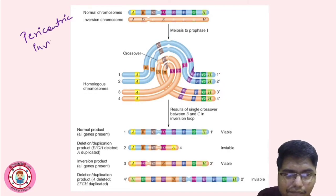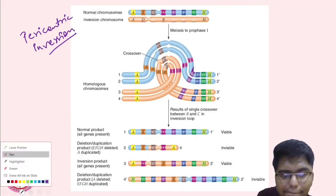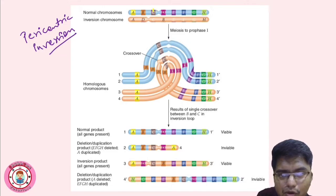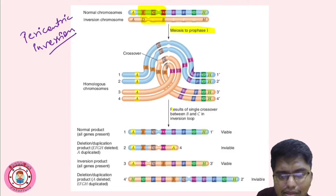Now for pericentric inversion — the same cases apply overall. Here the centromere is involved and is located between C and D. The same segment B C D is inverted, so it becomes D C B, and the centromere position has changed. In meiosis, during prophase one, there will be a crossover within the inversion loop.